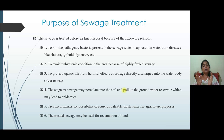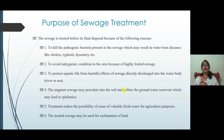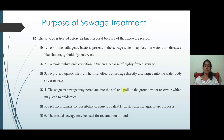The fifth point is that treatment makes possible the reuse of valuable fresh water for agricultural purposes. Up to 80% of the per capita demand is converted into wastewater — that is a huge quantity — and if we treat this wastewater and reuse it for agricultural purposes, it will benefit agricultural activities. Also, treated sewage may be used for reclamation of land, as the heavy solid particles present in the sewage can be used for this purpose.